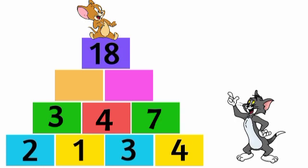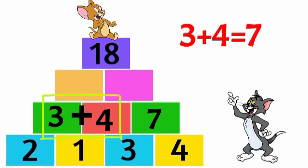See, Tom has filled second line boxes. Now, Tom is taking 3 plus 4. Equal to 7. So, here is 7.